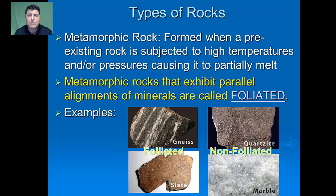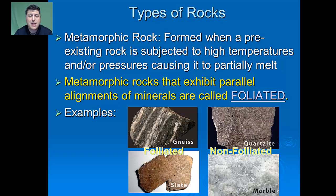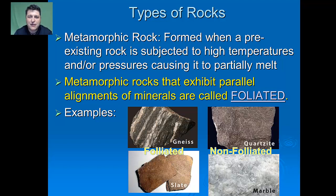Foliated metamorphic rocks are identified based on their texture. Non-foliated metamorphic rocks form around igneous intrusions where temperatures are very high but pressures are relatively low and equal in all directions. The original minerals re-crystallize into larger sizes, and atoms become more tightly packed together, increasing the overall density of the rock. Non-foliated metamorphic rocks are identified on the basis of their composition.